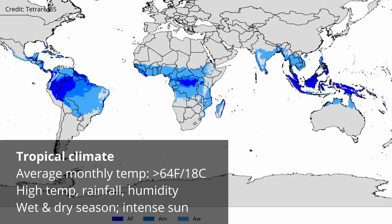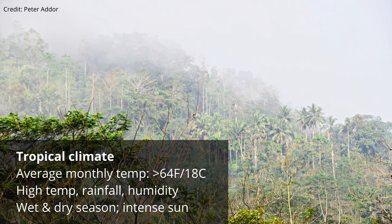In contrast, in tropical climates the average monthly temperature is above 64 degrees Fahrenheit or 18 degrees Celsius, and there's significant rainfall. Temperatures and humidity are high year round. Since tropical climates are usually found around the equator, the sunlight is really intense. Instead of four seasons, you'll primarily have a wet and a dry season.